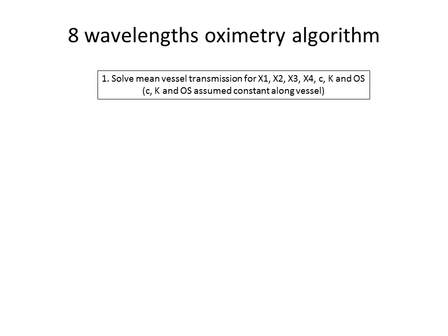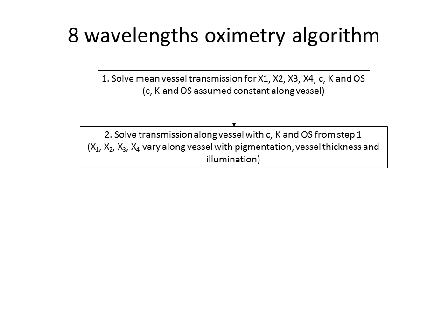Since we have 8 wavelengths and 7 variables, if we try to solve that, we'll have lots of variations along the vessel in the oxygen saturation. We developed an oximetry algorithm to implement some stability in the measurements by making some steps and assumptions in each step. The first one is to solve the mean vessel transmission for the path lengths, basically for all the parameters, and we will assume that the concentration, the contrast reduction and the oxygen saturation are constant along the vessel, which is more or less a sensible assumption. We'll keep the concentration and the contrast reduction for the next steps, and the oxygen saturation as well.